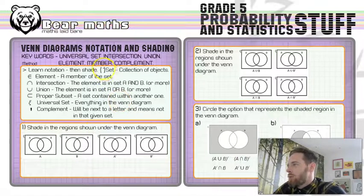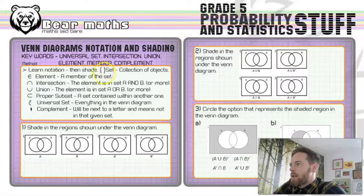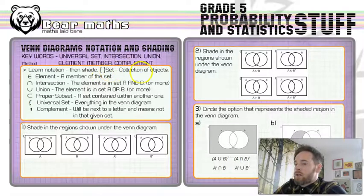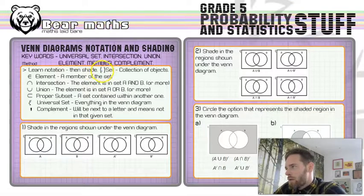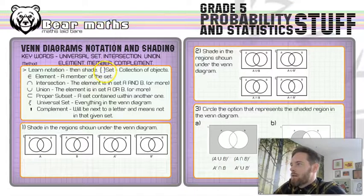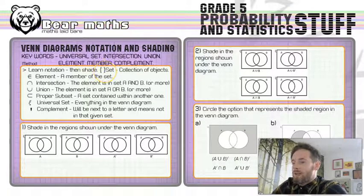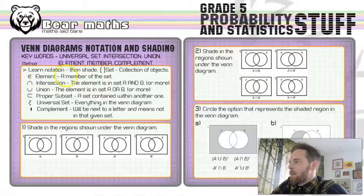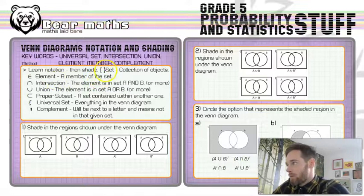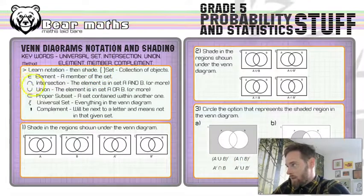These curly brackets up here indicate a set. That's a collection of objects or a collection of numbers or things. So, there'll be things in between these two curly brackets and that means that's included within that particular set, whether it be A, B or any other letters. This E-looking symbol means element and it's a member of the set. So, anything that's in these curly brackets, that's an element.